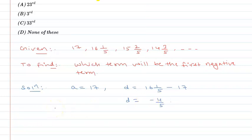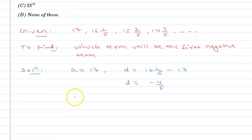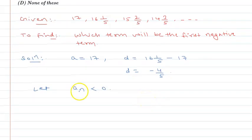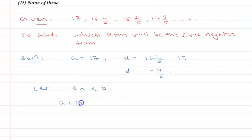So let me tell you which term will become negative first. Let us note that a_n will be negative for some n. Now a_n is given by a plus (n-1) times d, where a is the first term and d is the common difference.